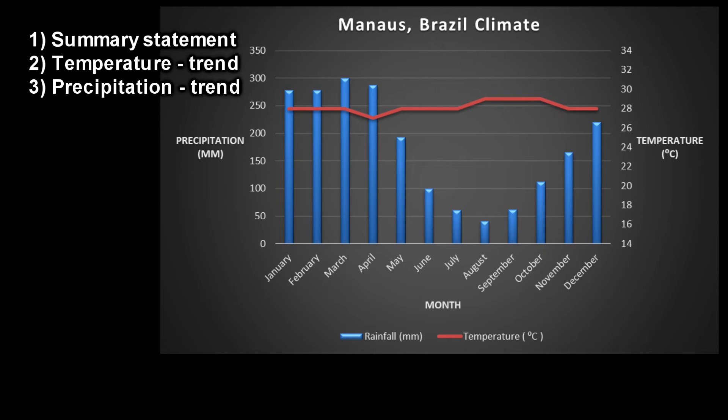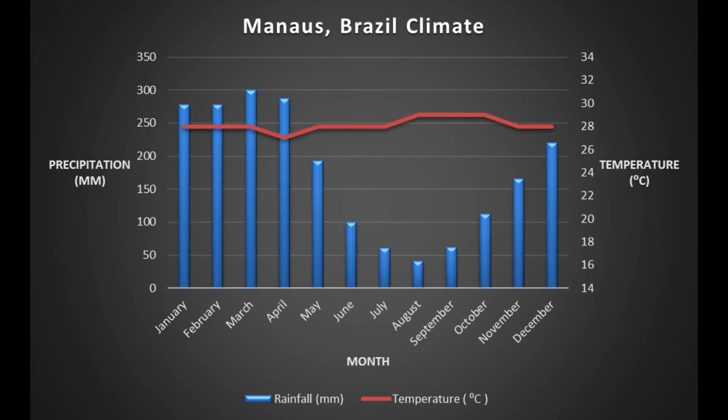When we break down the Manaus data, we can see quite clearly that the temperature is very consistent throughout the year — it stays just under 30 degrees all year round, so there's very little variation. When it comes to rainfall, it's a very high rainfall area, peaking around 300 millimeters in March, with lows in August of under 50 millimeters.